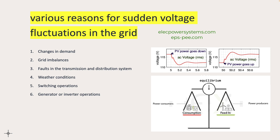It is important to identify and address the root causes of sudden voltage fluctuations to maintain a stable and reliable electrical grid. Grid operators employ various measures such as voltage regulation equipment, reactive power compensation, and advanced control systems to mitigate the impact of these fluctuations and maintain a consistent voltage supply.